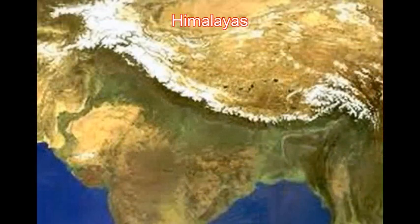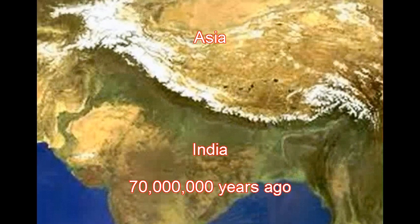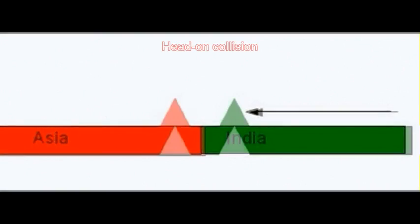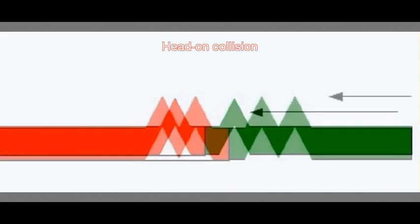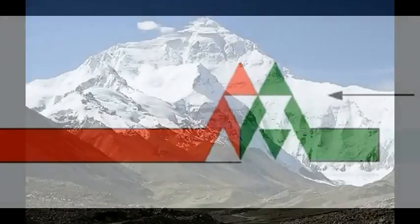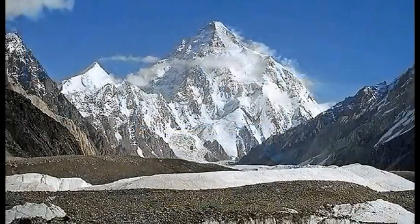Formation of the Himalayas. 70 million years ago, India touched Asia. Instead of slipping under her or over her, he built with her the very highest mountains on the planet, almost 9 kilometers tall.